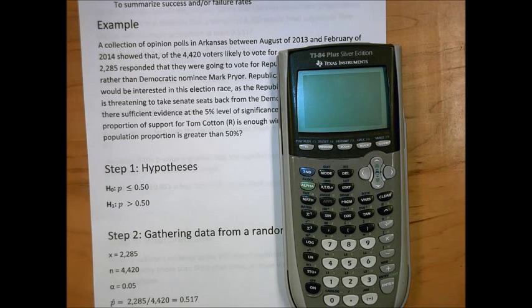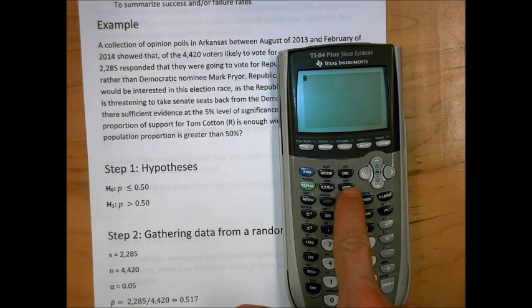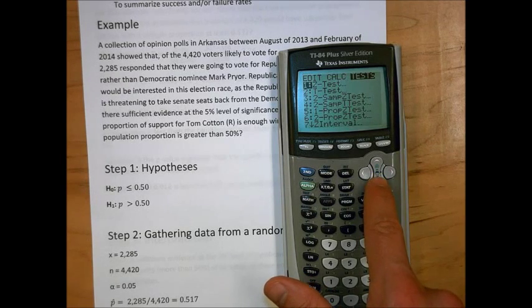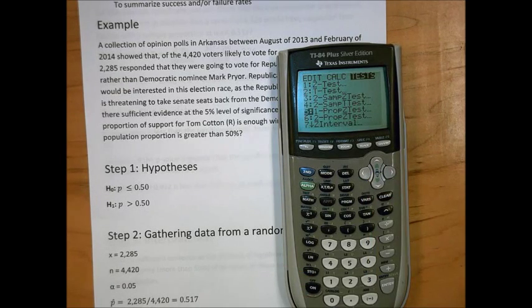If you'd like to do this test on your TI-84 calculators, then all you need to do is remember the key information you got from step 2. Go to the STAT button on your calculator, scroll over to Tests, and go to the 1 prop z-test. It's a one proportion test using a z-distribution.